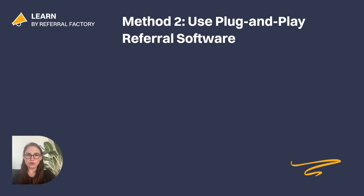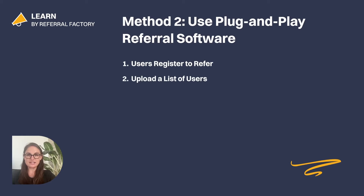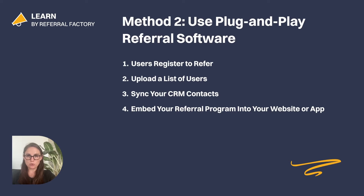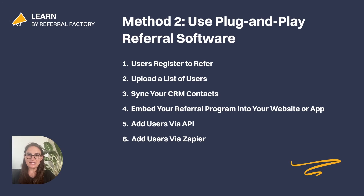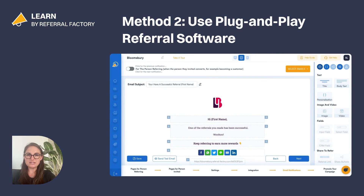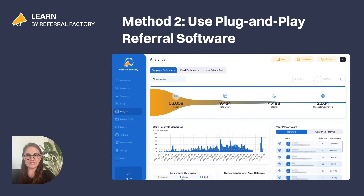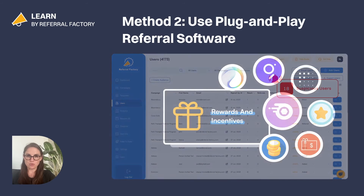The other option is to use referral program software like Referral Factory. This makes creating referral links a breeze, and you have multiple ways to add your customers, partners or affiliates. They can opt in and register to get a referral link. You can upload a list of contacts and email them their links directly. You can sync your CRM contacts, embed a referral widget or pop-up into your website or logged-in environment, or even add referrers via API or Zapier. Plus, referral software typically includes all the small details that you might not think to consider, such as built-in email notifications, real-time analytics, fraud prevention, and automated rewards management.